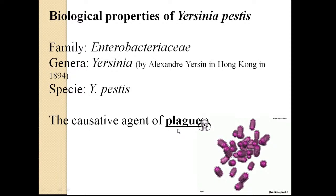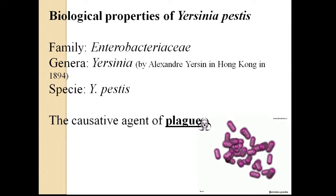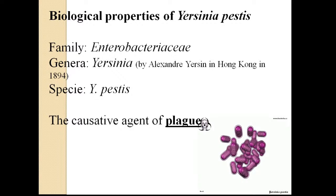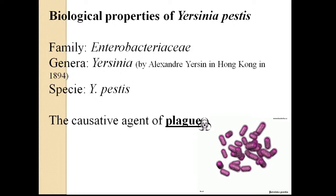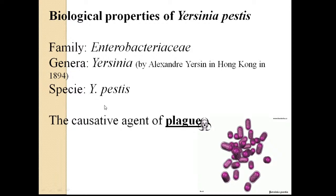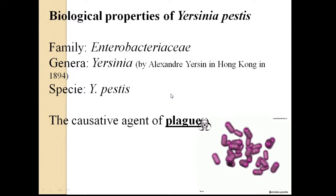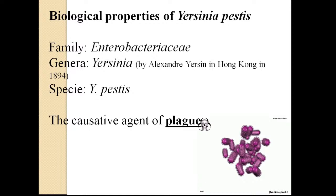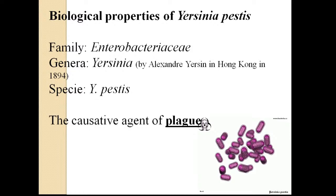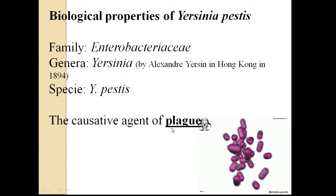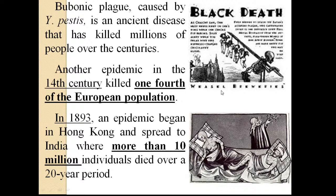Yersinia pestis causes plague. At our practical classes this week I noticed students confusing the name of the bacteria with the name of the disease. When asked the name of the bacteria, you must say Yersinia pestis. When asked which disease it causes, you should answer plague. Please don't be confused — name of bacteria and name of disease are different.